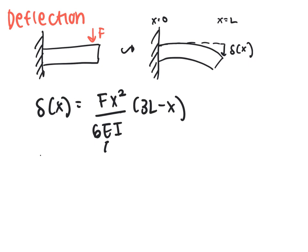So that means at the tip, which will have a maximum deflection, we could plug in L for that, and we're going to get f L cubed over 3 EI. So this is the maximum deflection of our beam.